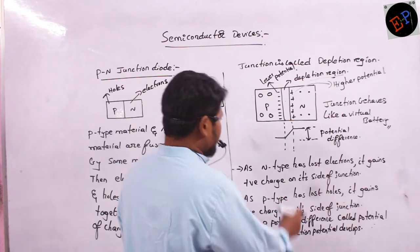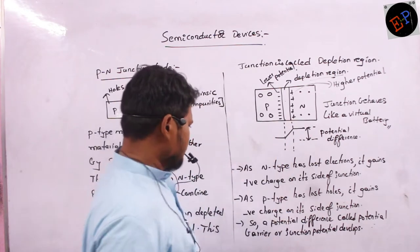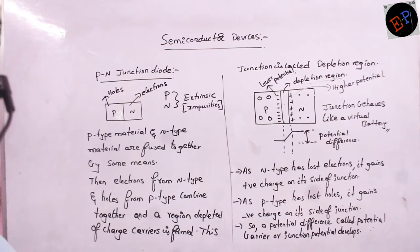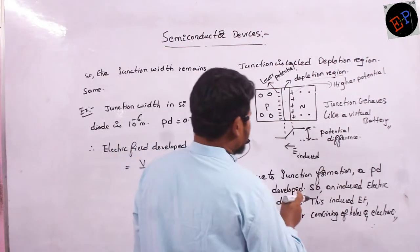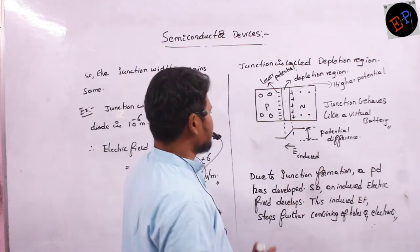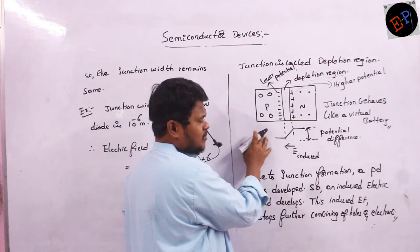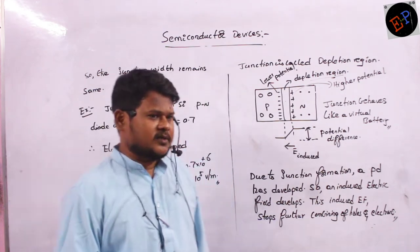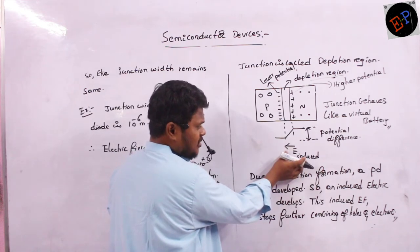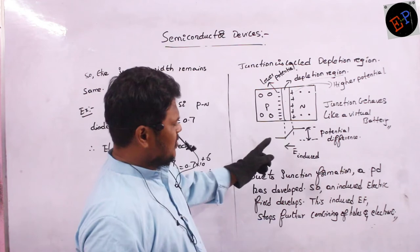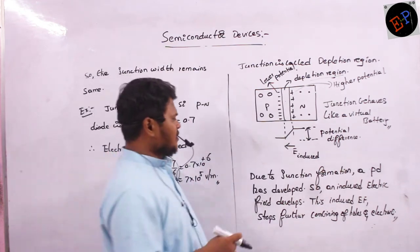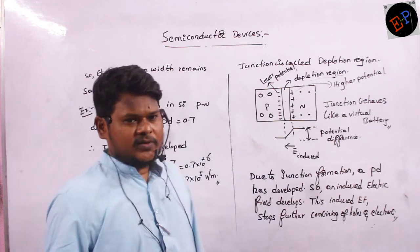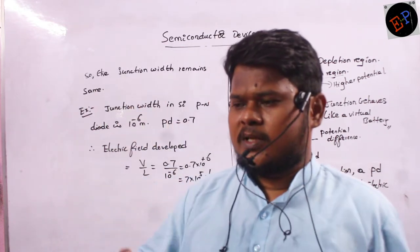Now, can you say what is the direction of electric field? Electric lines of force always travel from positively charged body to negatively charged body — so that is the direction of induced electric field, from positive to negative. Once this induced electric field reaches a certain value, it will further stop the recombination of holes and electrons. After reaching a certain value, it stops recombination.